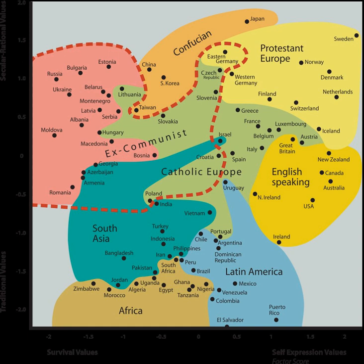Secular-rational values have the opposite preferences to traditional values. Societies that embrace these values place less emphasis on religion, traditional family values, and authority. Divorce, abortion, euthanasia, and suicide are seen as relatively acceptable. The shift from traditional to secular-rational values has been described as essentially the replacement of religion and superstition with science and bureaucracy.